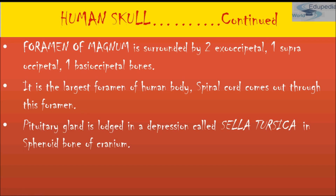Among the 8 bones of the cranium there is the sphenoid bone, which has a depression called the sella turcica — the cell in which the pituitary gland is situated.